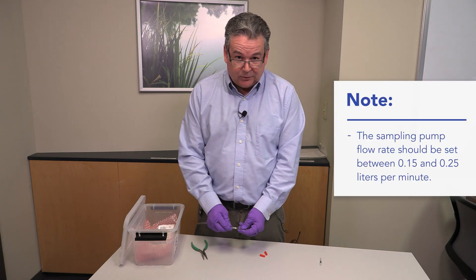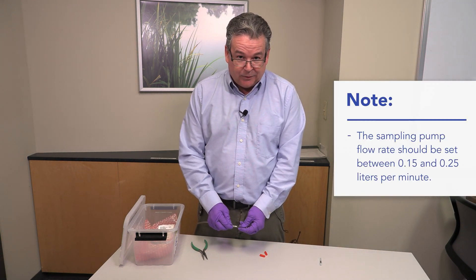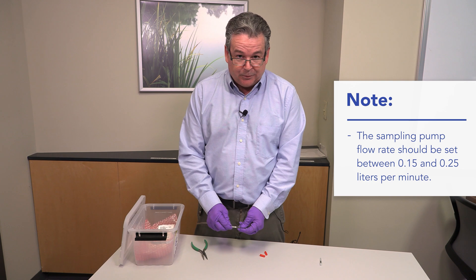Per the method, the sampling pump flow rate should be set to 0.15 to 0.25 liters per minute.